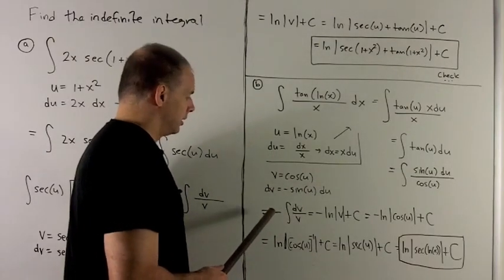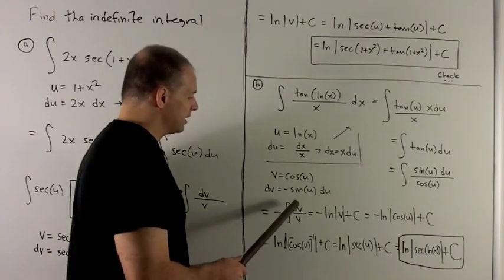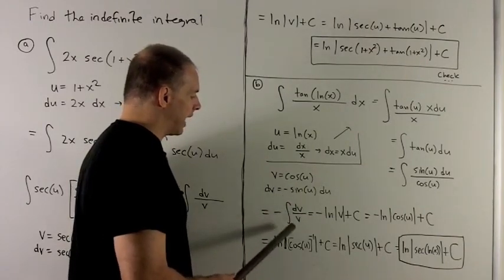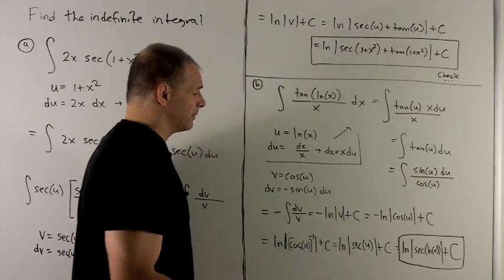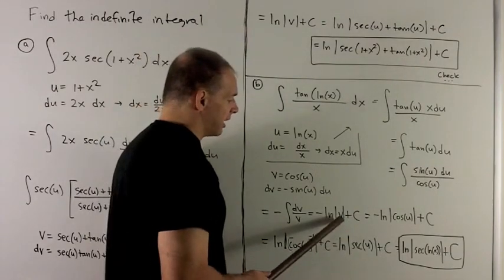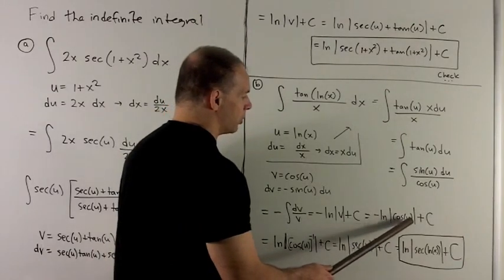So I'm going to have integral of minus dv over v. We know how to do that. That's going to be minus natural log of absolute value v, plus a constant. I stick in for v, which is going to be cos(u).